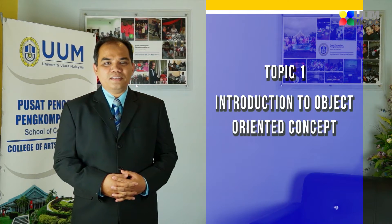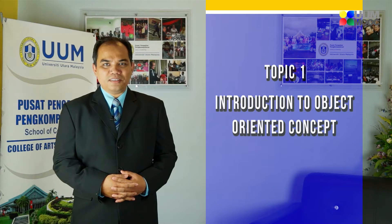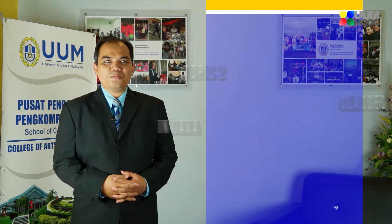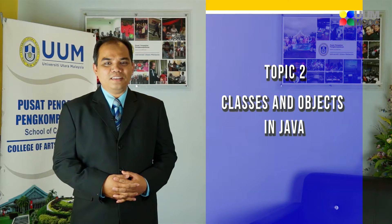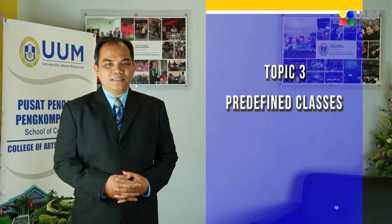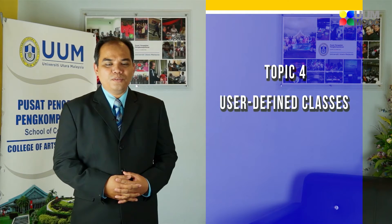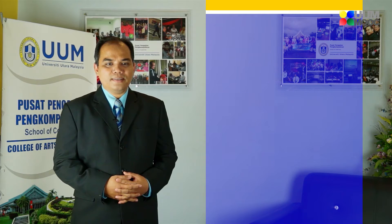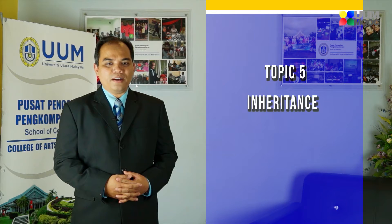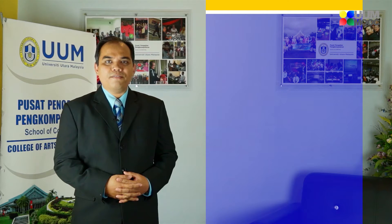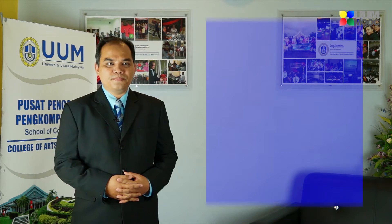This course will be divided into six topics covered in 14 weeks. The topics are: Topic 1, Introduction to Object Oriented Concepts; Topic 2, Classes and Objects in Java; Topic 3, Pre-defined Classes; Topic 4, User Defined Classes; Topic 5, Inheritance; and finally, Topic 6, Polymorphism.